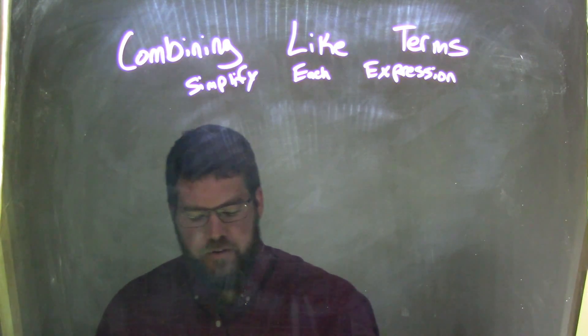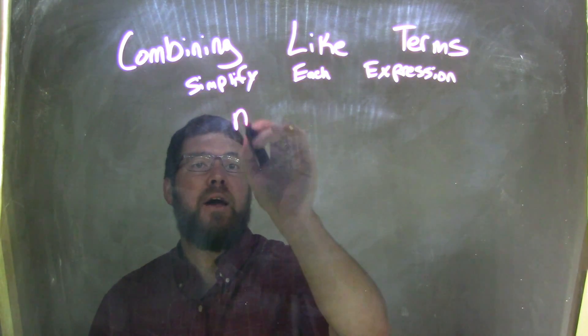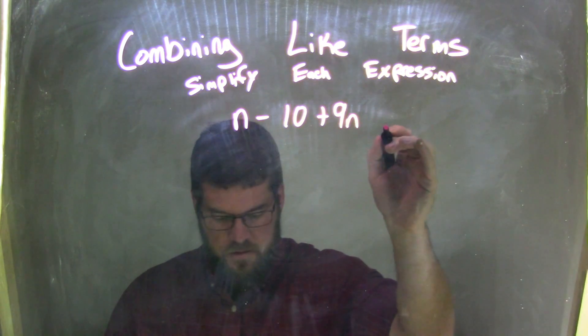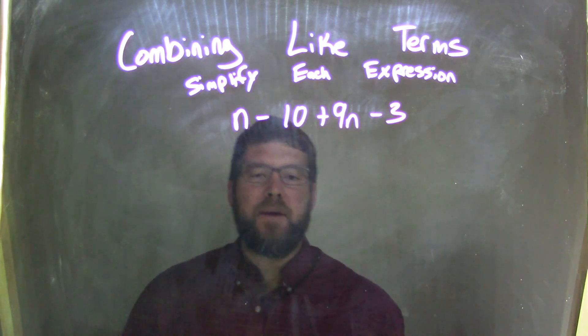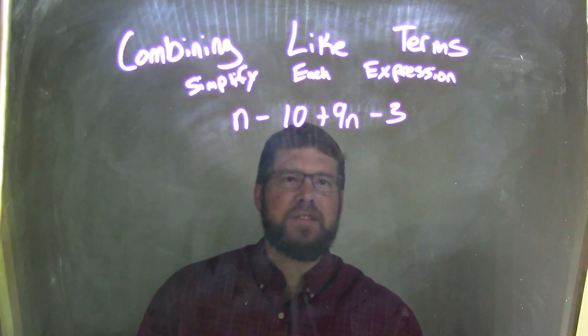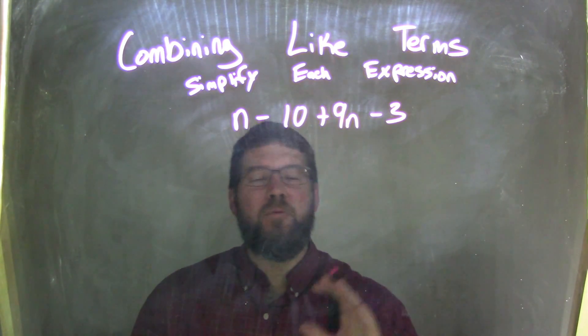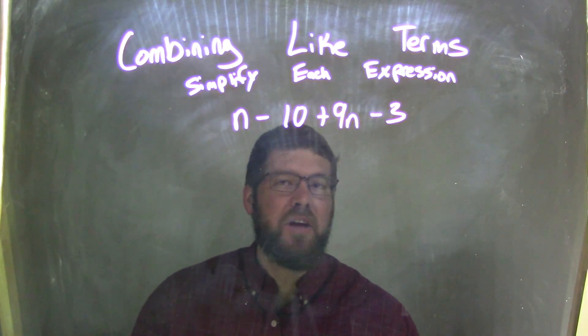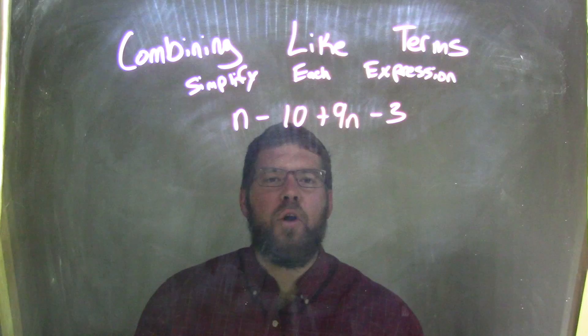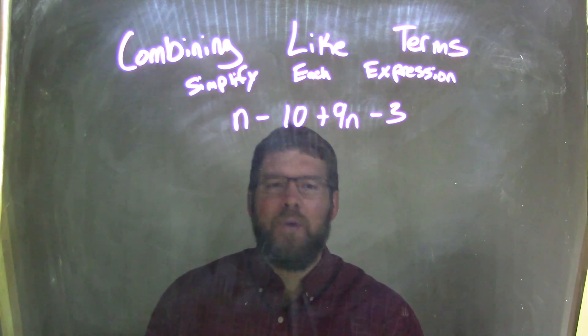So if I was given this expression, n minus 10 plus 9n minus 3. Well, what I like to do with my first step, especially with stuff like this, if I have to rearrange, because the n's aren't together, are near each other, and a 10 and a 3 is not, or a 9.